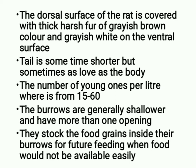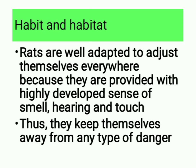The number of young ones per litter varies from 15 to 60. The burrows are generally shallower and have more than one opening. They stock food grains inside their burrows for future feeding when food would not be easily available. Habit and habitat: rats are well adapted to adjust themselves everywhere because they are provided with highly developed senses of smell, hearing and touch.